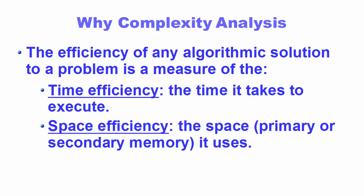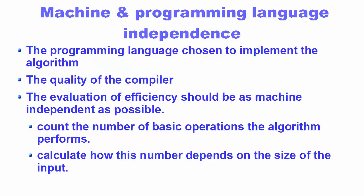The efficiency of any algorithm to solve a problem is the measure of two different things: first is the time efficiency, and second is the space efficiency. Time efficiency deals with how much time an algorithm takes to execute, and space efficiency deals with the memory usage — that means how much space an algorithm takes.